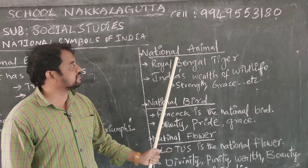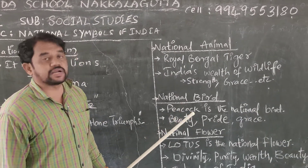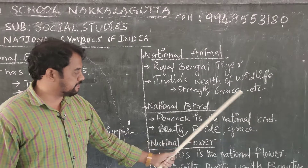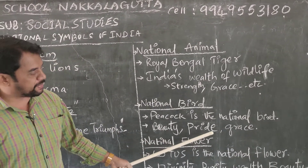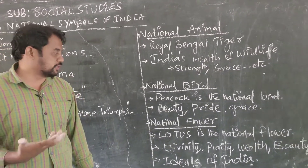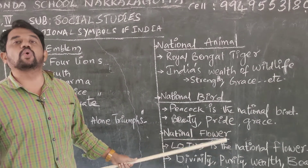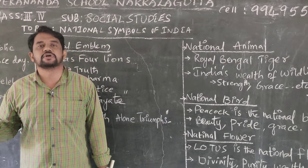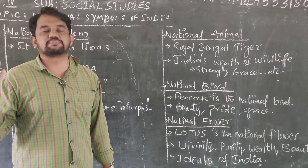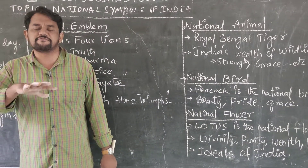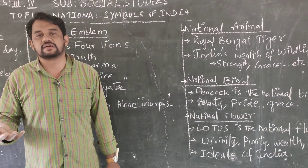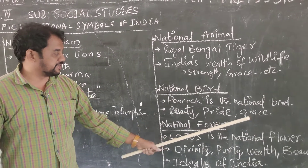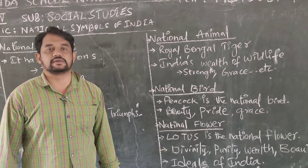Next we take a bird as a representation — the national bird. The peacock is the national bird, and it symbolizes the beauty, the pride, and the grace of our country. Our India is very beautiful and we have great pride. To represent the beauty of India — with all the different types of monuments, architecture, mountains, rivers, valleys, plains, plateaus, oceans, and the greenery of trees — everything makes a beauty. To represent this beauty of India, we take the peacock as our national bird. It shows the beauty and pride of India.